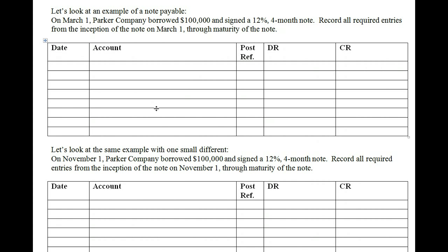Let's move into Chapter 11, which discusses current liabilities. A current liability is a debt with two primary characteristics. One, the company will pay the debt through the use of a current asset, or they may create an additional current liability to pay off the debt. Second, the company will pay the debt within one year or operating cycle, whichever is longer.